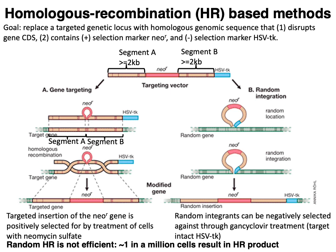With segment A and segment B in hand, you can design a targeting construct consisting of both segments. In the targeting construct, you separate these two segments by the coding sequence of a drug selection marker, for example neomycin phosphotransferase (NEO-R). You also typically flank either segment A or segment B with a negative selection marker like HSV thymidine kinase (HSVTK).